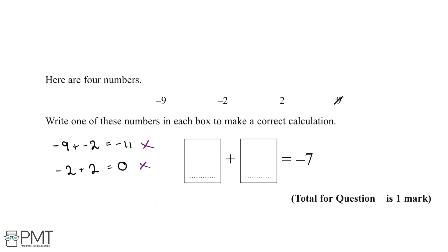The only two remaining numbers are minus nine and two. Minus nine add two gives us minus seven.